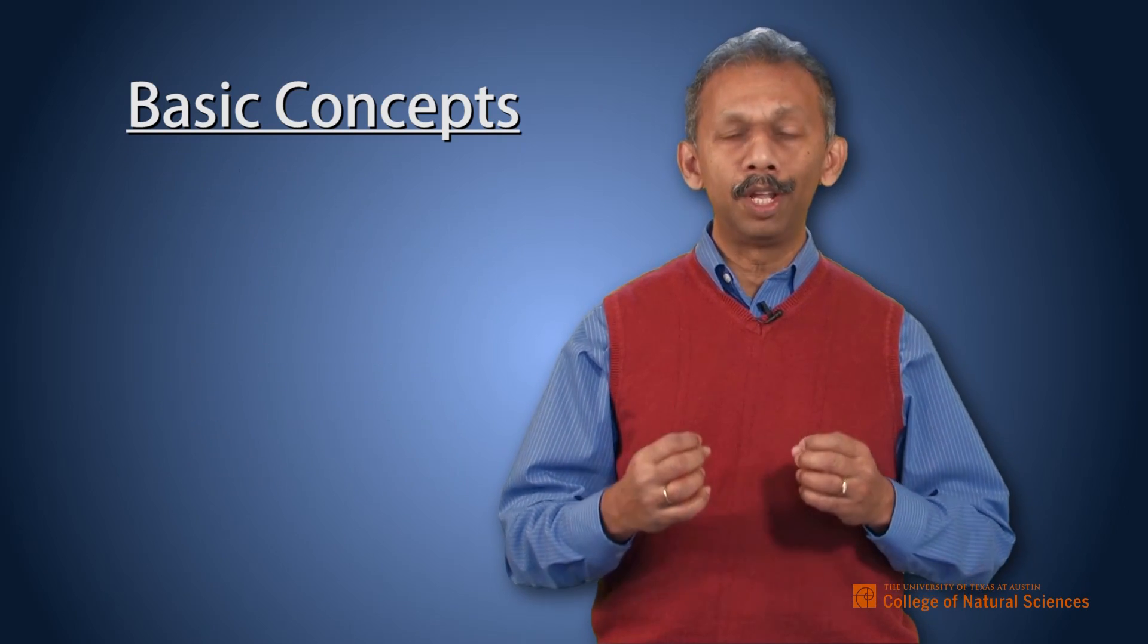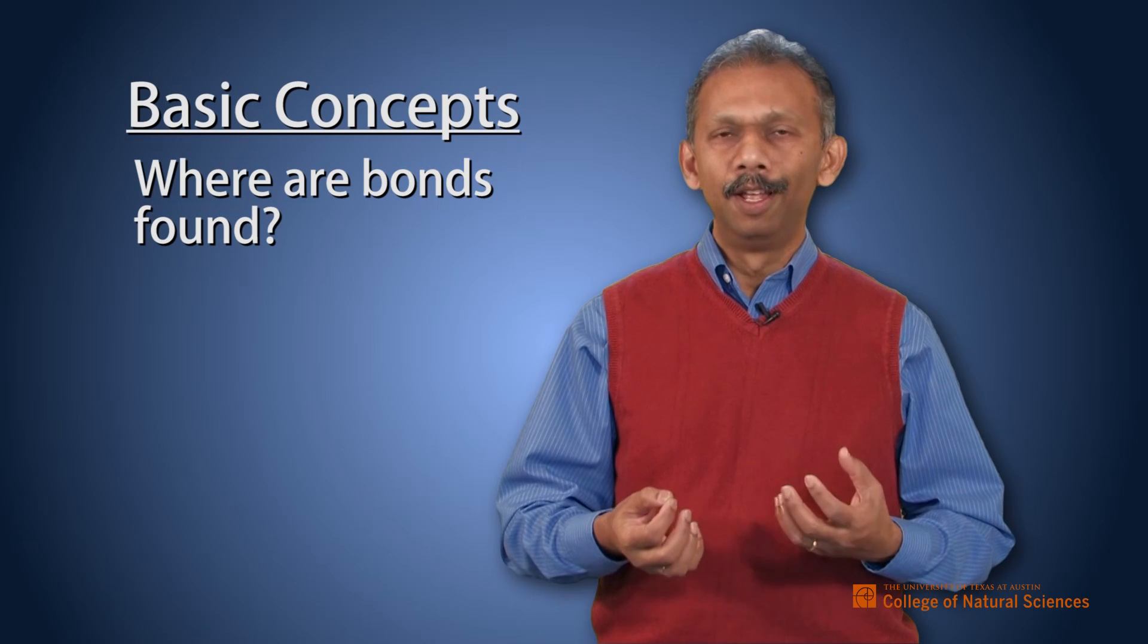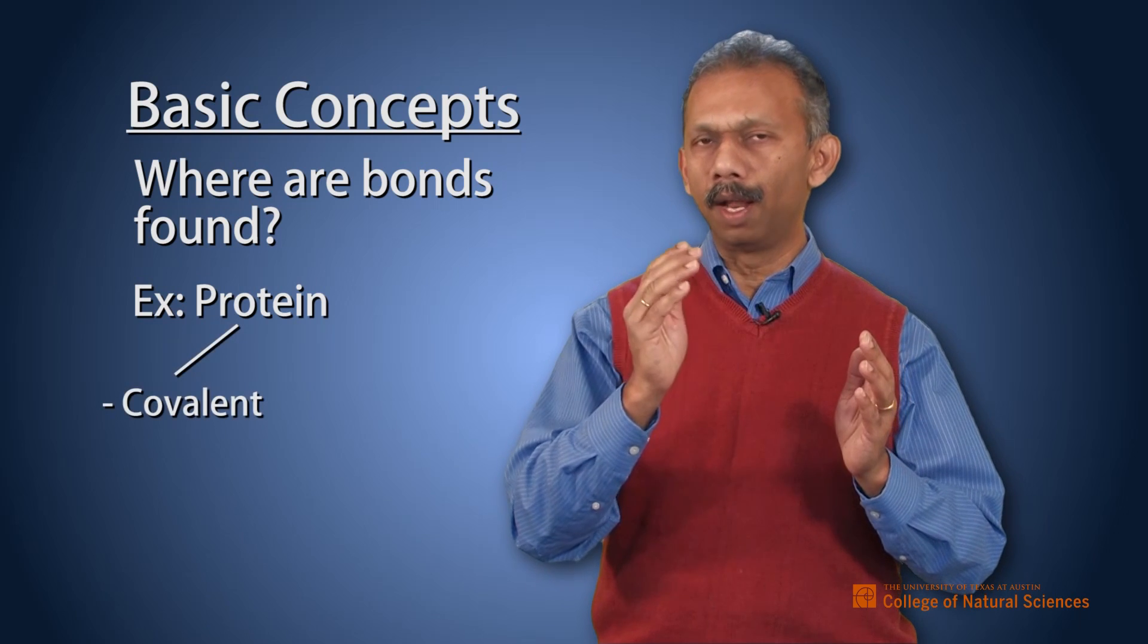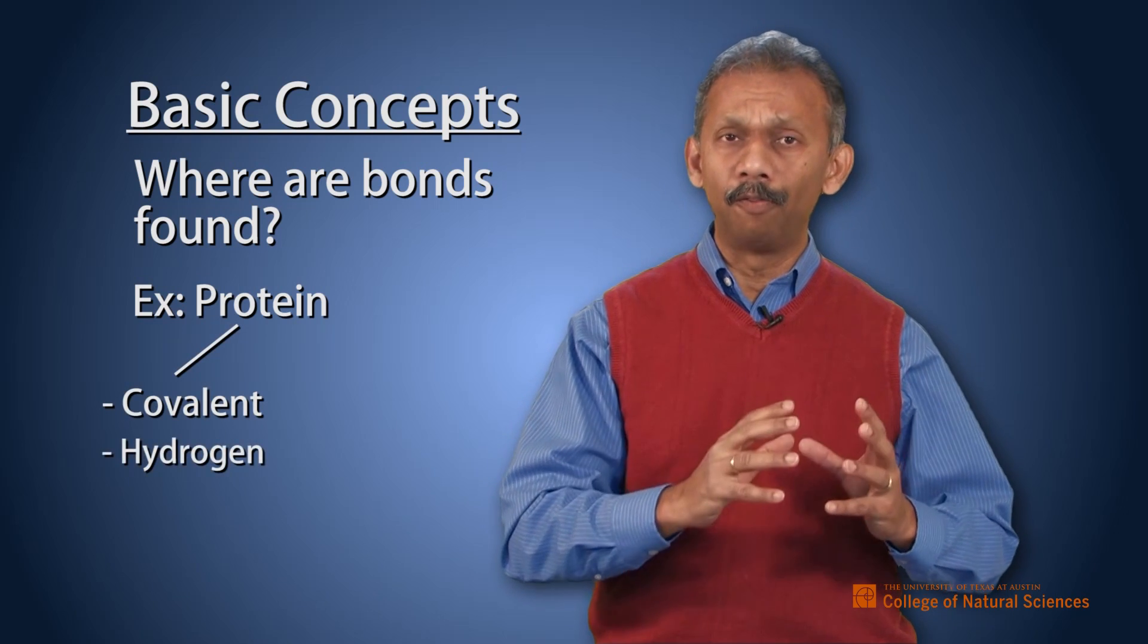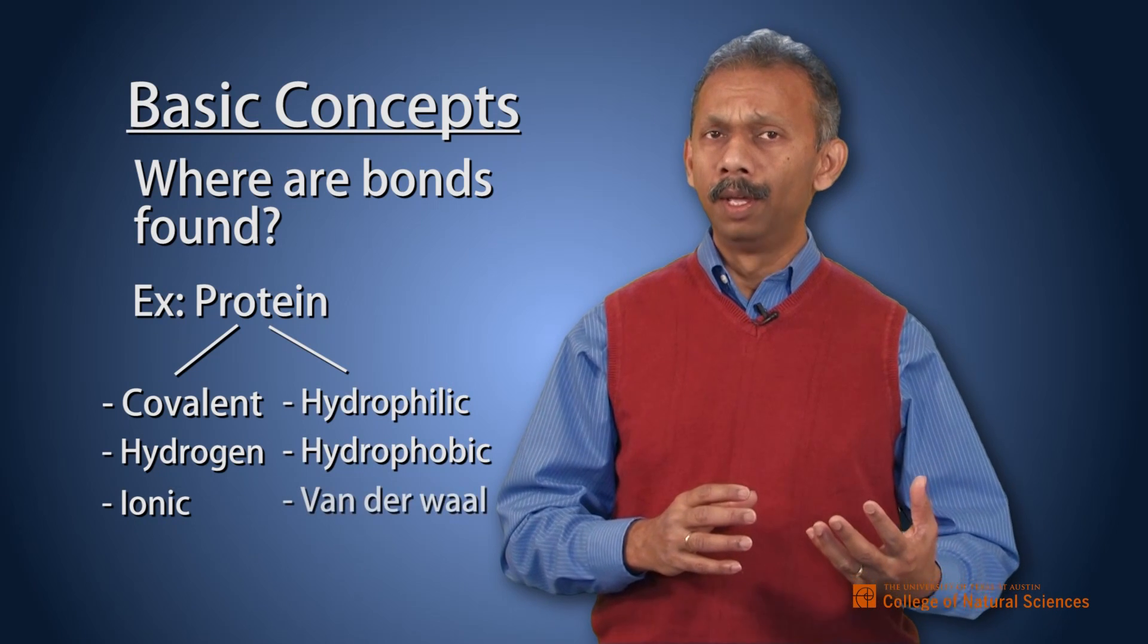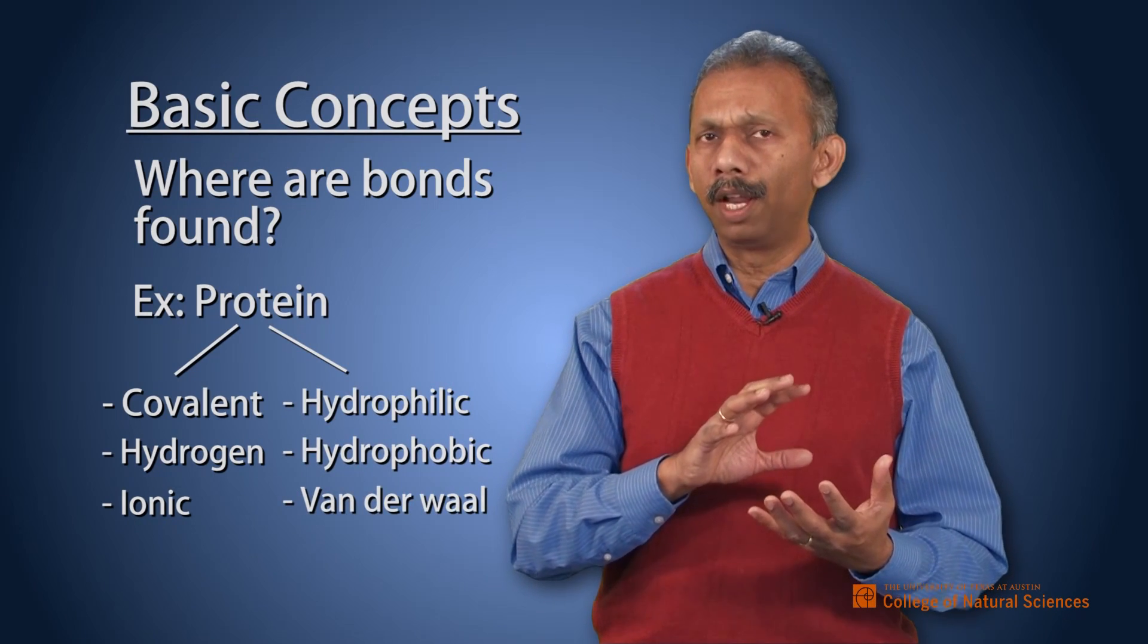Lastly, in this chapter, you need to also pay attention to where do you find these bonds in biological molecules. So in biological molecules such as a protein, it's a complex molecule, and you would find covalent bonds, you will find hydrogen bonds, you will find ionic bonds, and hydrophilic-hydrophobic, and van der Waals. So this is important, not only learn the basics of chemistry, but also be able to apply that to biological context.